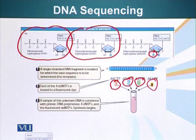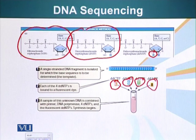So these di-deoxyribonucleosides will always have a molecule attached that will emit yellow color for A. Thymine will have a molecule attached that will emit green color. G has blue color, C has red color.